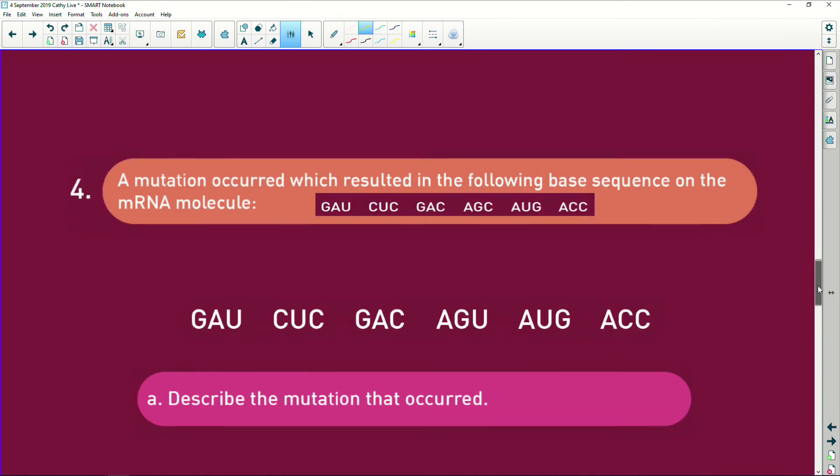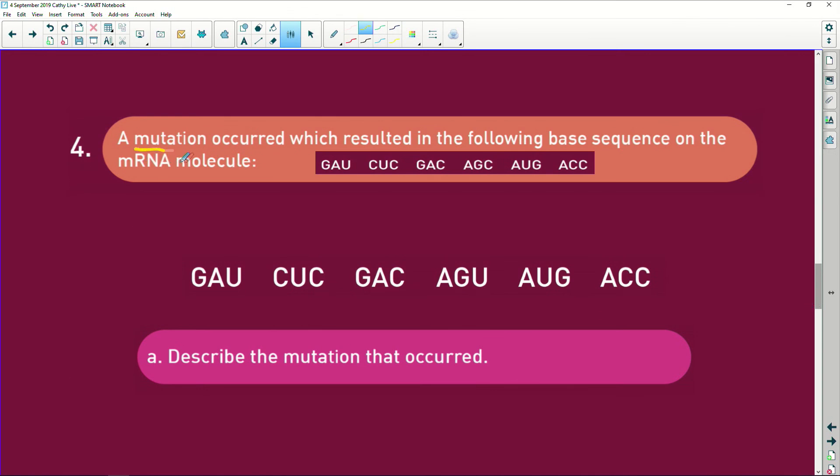Now what are we talking about? We're talking about mutations. A mutation occurred which resulted in the following base sequence on the mRNA. So this was the original one—that's one, two, three, four, five, and six—and this is the mutation that's resulted. Let's see: one is the same, two is the same, three, four—oh look here, that C has now changed to a U. This one is the same and that one is the same.